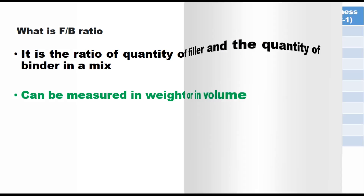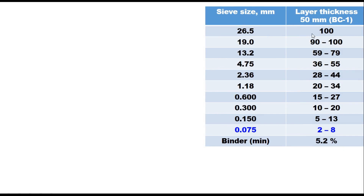Say for example you have the gradation of a BC layer 50 mm thick as given in MRTH specifications of 2013. If you look at this grading, the filler — that is material passing 75 micron — can be 2 to 8 percent. The specification suggests that the minimum quantity of binder should be 5.2 percent by weight of the total mix.